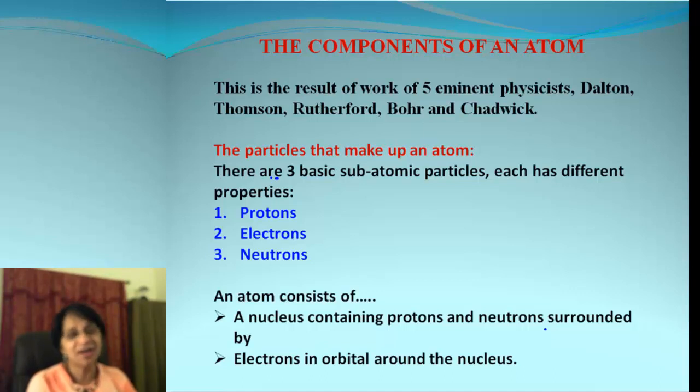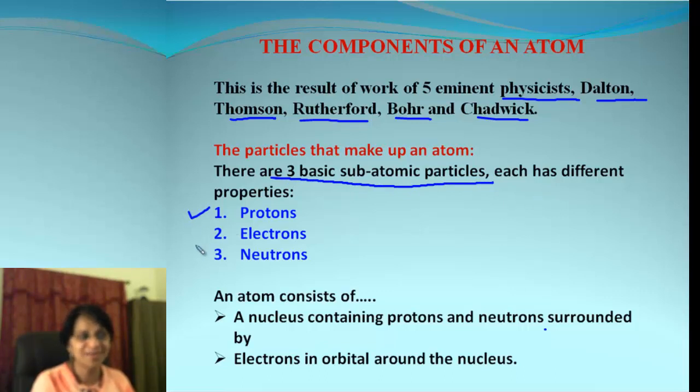Now, it is not just the work of one scientist. As you know, many scientists, actually physicists, they worked so hard to come up with today's atomic model. Some examples of scientists are Dalton, Thompson, Rutherford, Bohr, and also Chadwick. So, what did we conclude with all that? That every atom has three basic subatomic particles. And what are those? Those are protons, electrons, and neutrons.